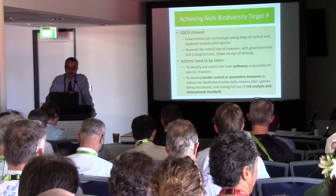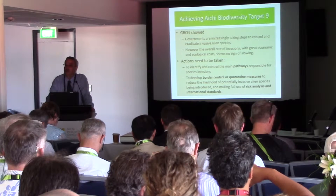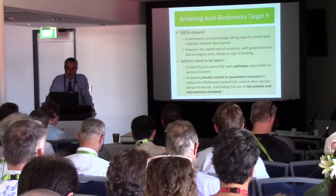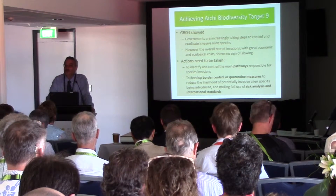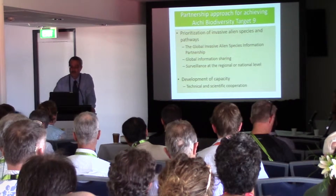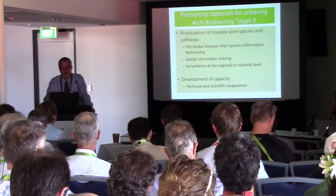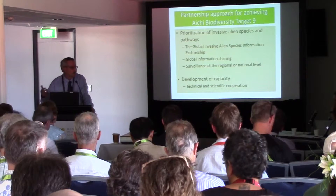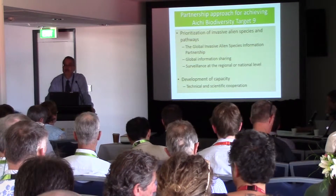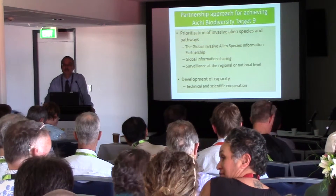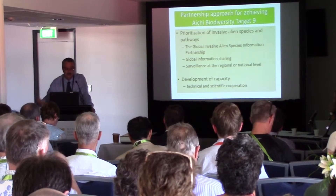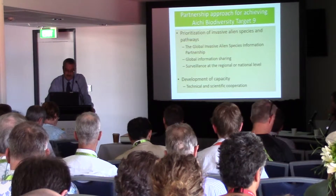Regarding invasives, some priorities identified include enhancing our work with pathways. We have been doing that in partnership with many international organizations that establish standards — for example, to enhance border controls and quarantine systems to better control the spread of invasives. To do this, we need partnerships. We have a Global Invasive Alien Species Information Partnership together with IUCN, GBIF, and several other important organizations. Through that work, we're hoping to facilitate access to updated information about invasives, facilitating information sharing and surveillance and early warning systems at different scales.